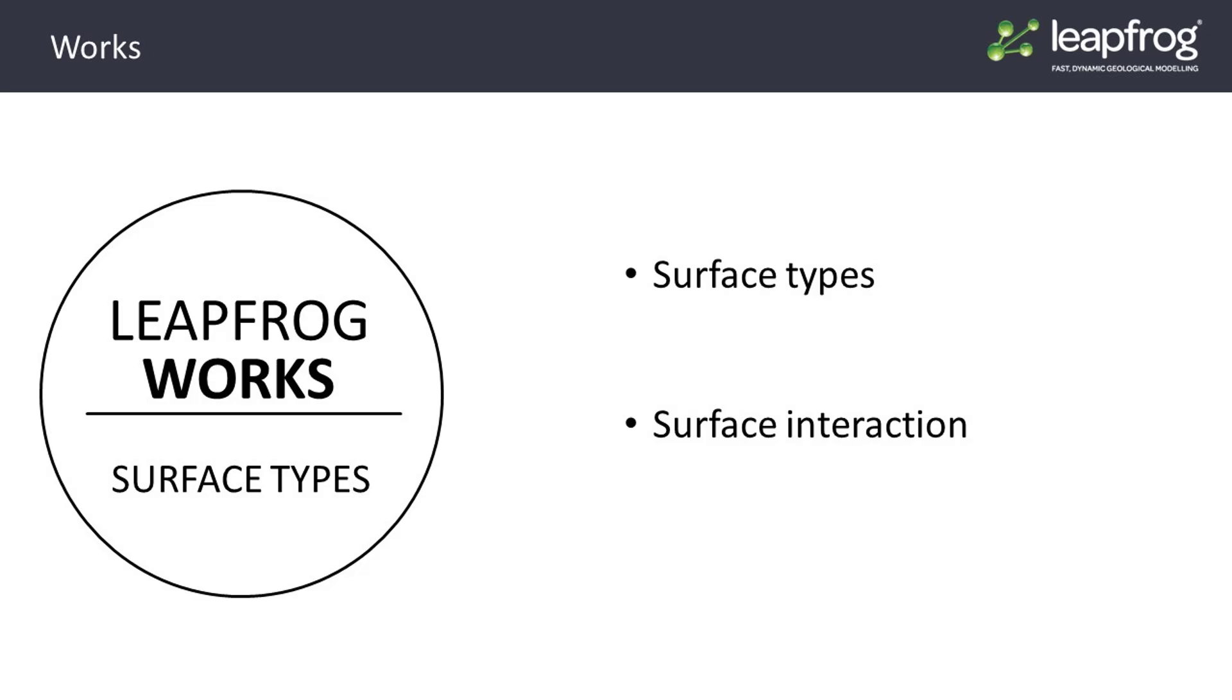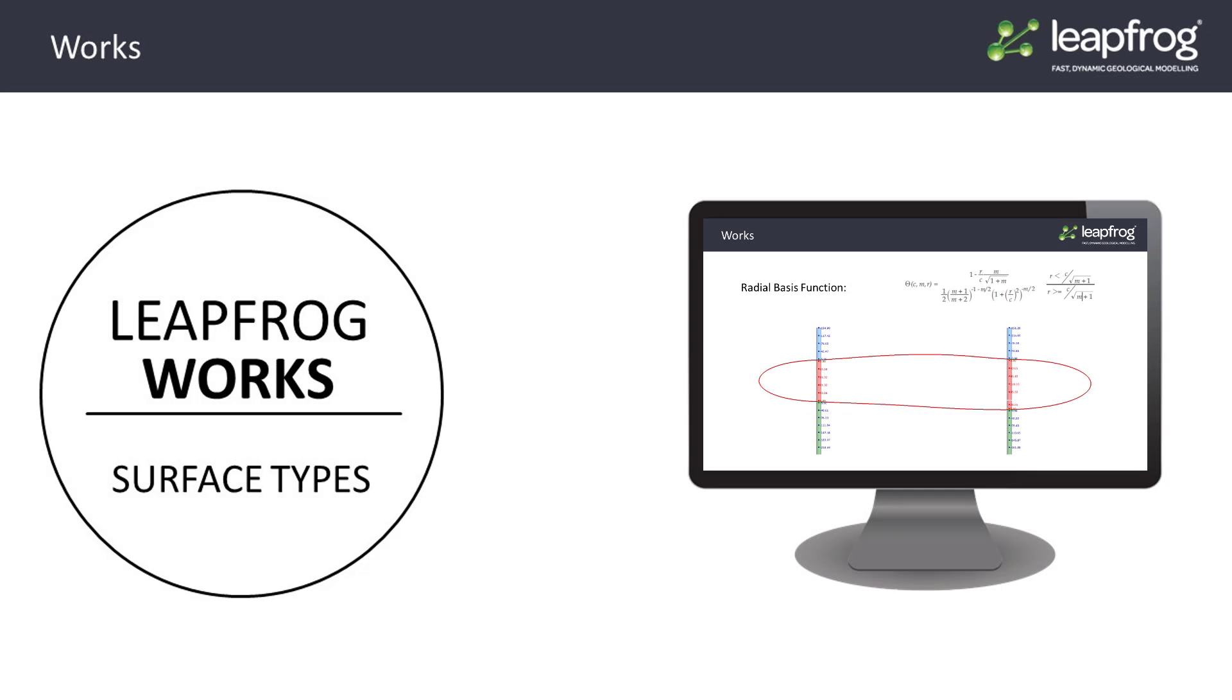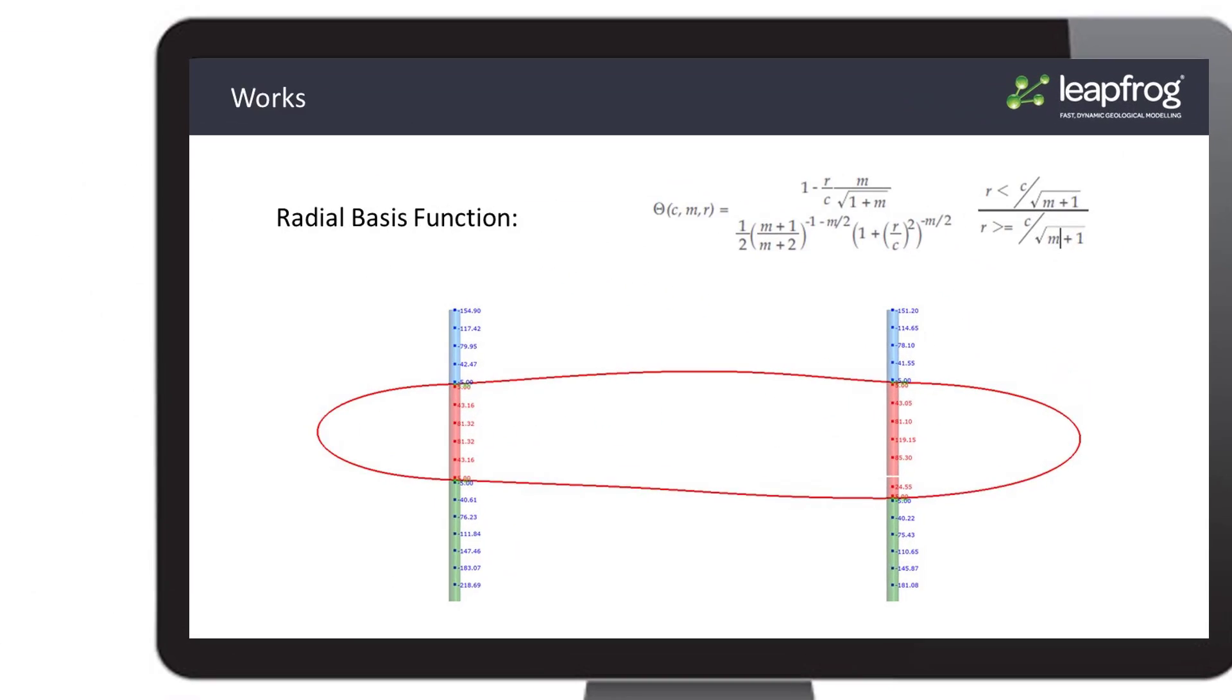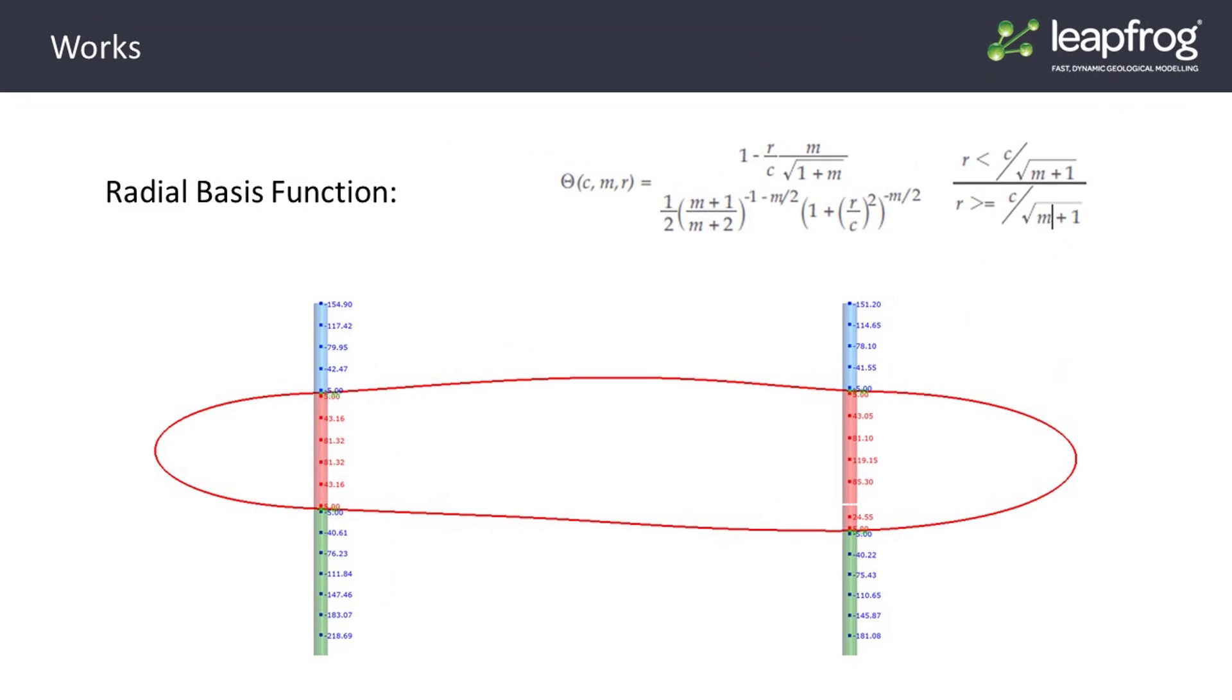Once built, these surfaces are used to form the interlocking geological model volumes. LeapFrog creates surfaces using radial basis function, or RBFs. The RBF is a mathematical function which creates smooth surfaces between a series of points.